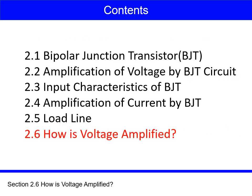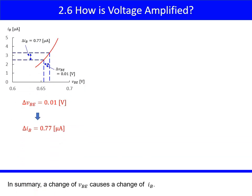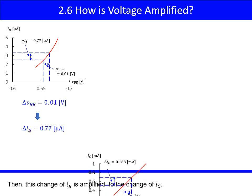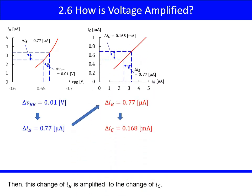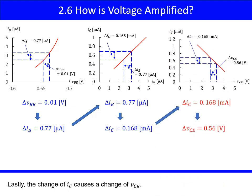Section 2.6, How is voltage amplified? In summary, a change of Vbe causes a change of Ib. Then this change of Ib is amplified to the change of Ic. Lastly, the change of Ic causes a change of Vce.